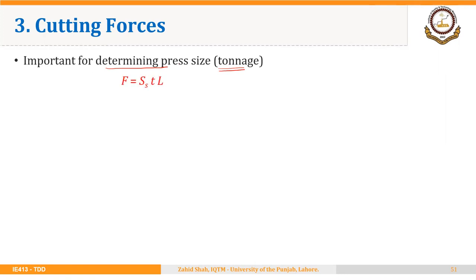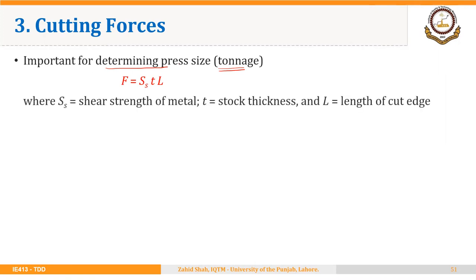The force required to perform a cutting operation is the product of three factors: S (shear strength of the metal being cut), T (stock thickness or the thickness of the sheet), and L (the length of cut edge — basically the length of the boundary or perimeter of the part being cut).